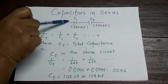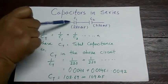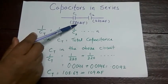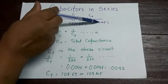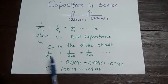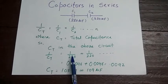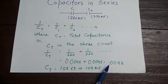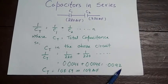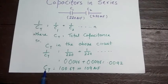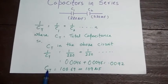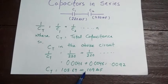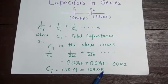If we want to calculate the capacitance of these two capacitors — again each is 220 microfarad — it will be: 1 by CT equals 1 by 220 plus 1 by 220. The result is 0.0092, and when we take the inverse, CT equals 108.69, approximately 109 microfarad.